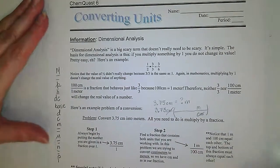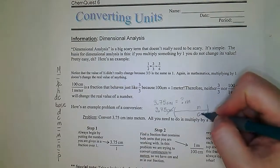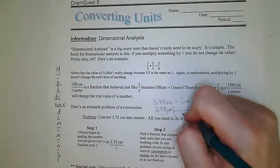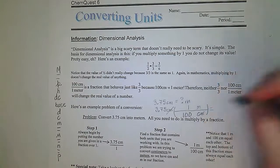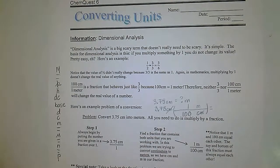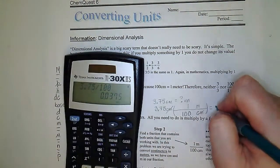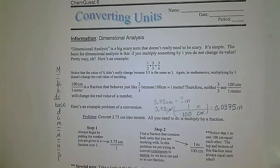This is where your metric system chart comes into effect. I always want to know which one's larger — that's a meter. How many centimeters? Meter is my base, so I move two places, which is one with two zeros, or 100. So I'm dividing by 100 because it's in the denominator. 3.75 divided by 100 is 0.0375 meters.